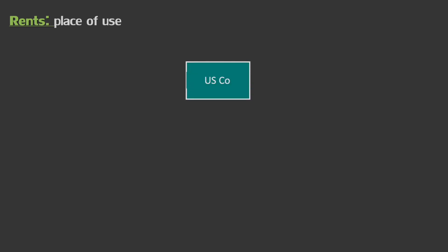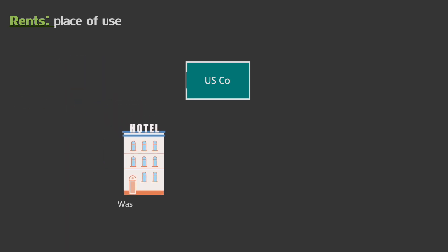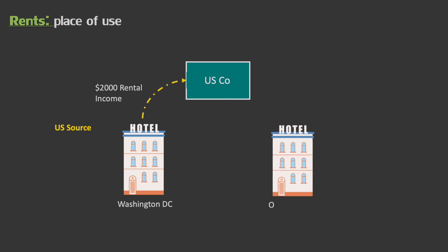Similar to royalties, rents also use a place-of-use standard. Let's assume I have a U.S. company, and that U.S. company has a hotel located in Washington, D.C., and is in the business of collecting rents on that hotel. That rental income — maybe it's $2,000 — would be considered U.S. source, since the hotel sits in the U.S. But if my U.S. company also has a hotel located in Canada and receives rental income from that Canadian hotel on its U.S. tax return, then that rental income would actually be sourced foreign, because the hotel being rented is being used in a foreign jurisdiction.